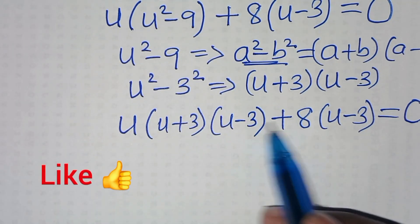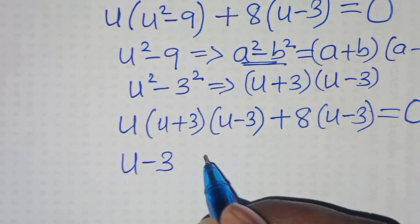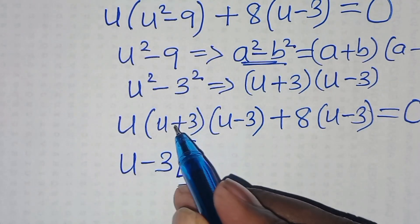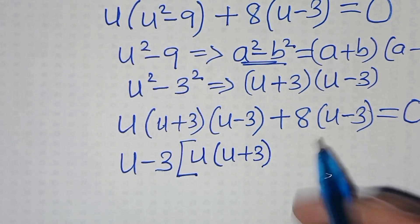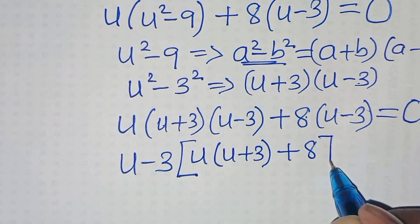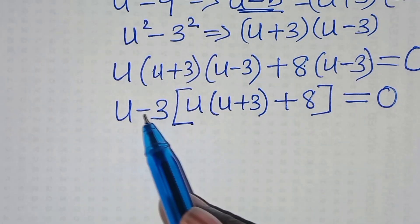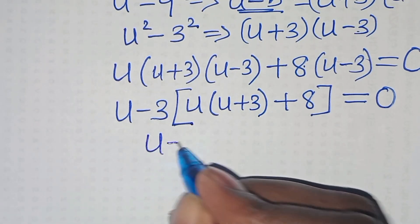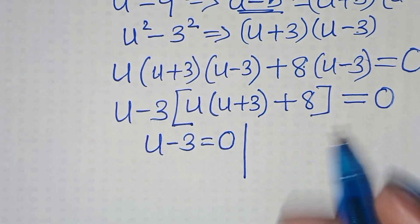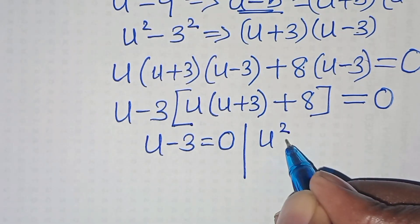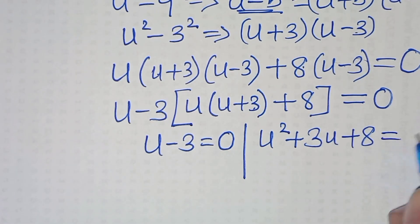Now you can see u minus 3 appears in both terms, so we can factor out u minus 3. Inside the parentheses we have u multiplied by u plus 3, then plus 8, this is equal to 0. So we have 2 parts here. The first part is u minus 3 equals 0. The second part: u times u is u squared, plus 3 times u is 3u, then plus 8, this is equal to 0.